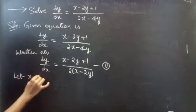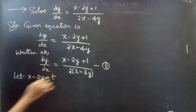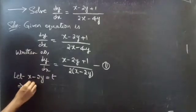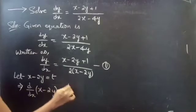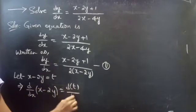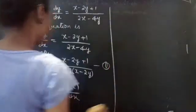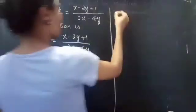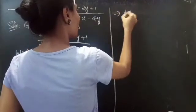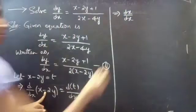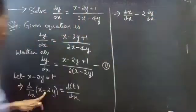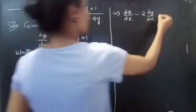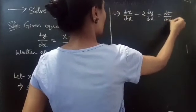Let x minus 2y equal t. Differentiating both sides with respect to x, we get d/dx of (x minus 2y) equals dt/dx, which gives dx/dx minus 2 times dy/dx equals dt/dx.